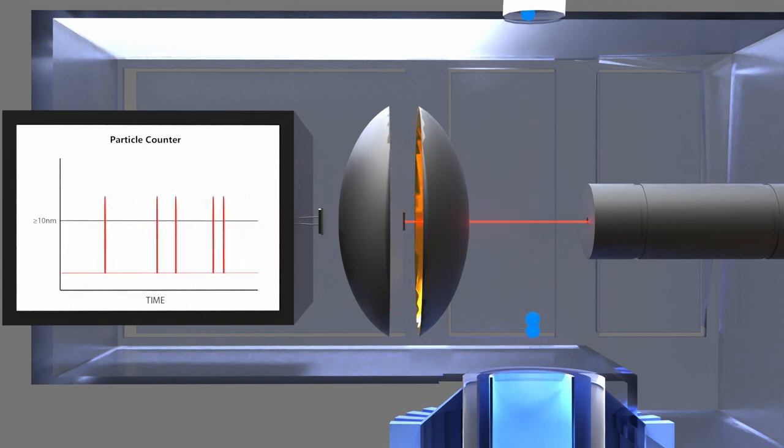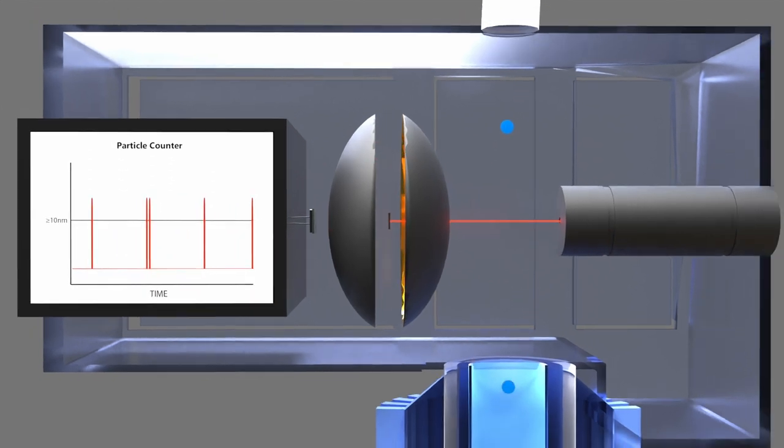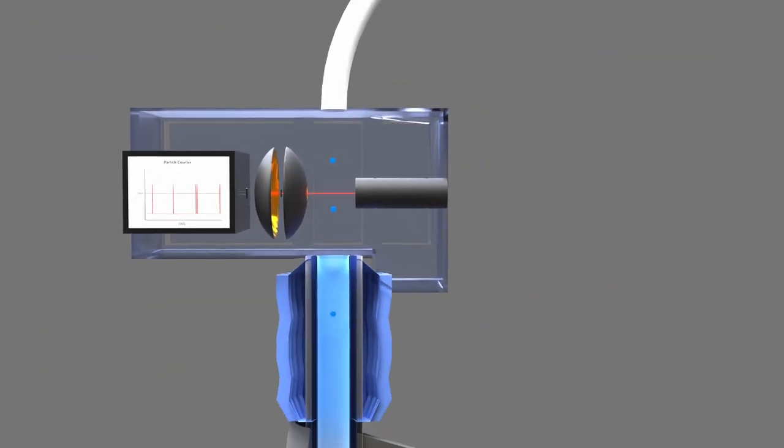Each droplet will generate a distinct pulse, so by counting the number of pulses we can tell, in real time, how many particles are present in the sampled gas.